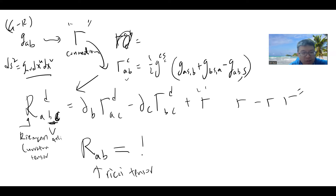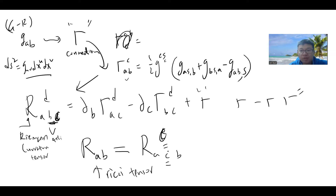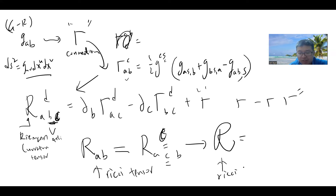From the Riemann tensor you can define the Ricci tensor by contracting the Riemann tensor on the middle index: R_{AB} = R^C_{ACB}, summing over C in Einstein notation. Finally, you can define the Ricci scalar R, defined as R_{AB} g^{AB}.